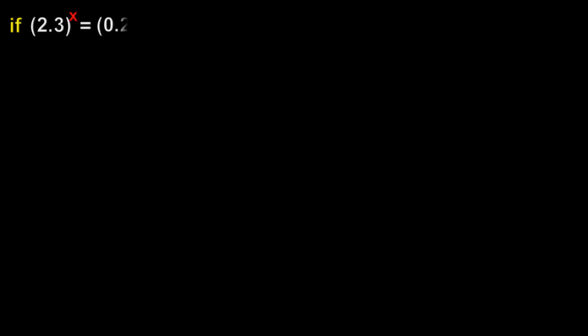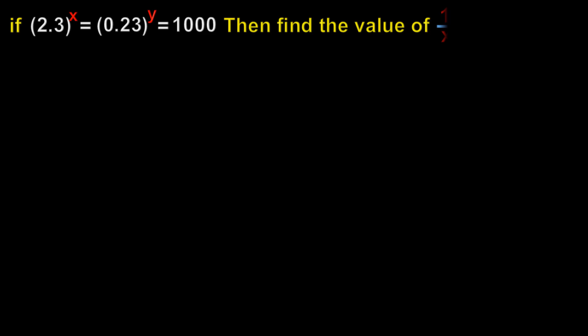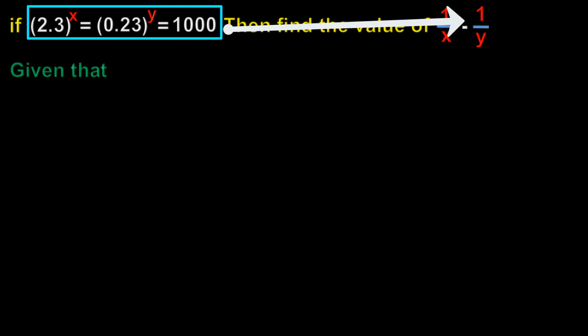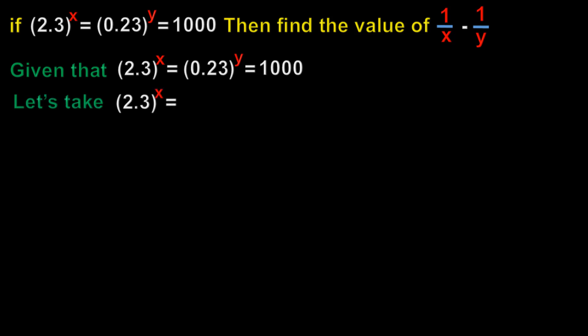Let us see one more problem. If 2.3^x = 0.23^y = 1000, then find the value of 1/x − 1/y. So here we are given 2.3^x = 0.23^y = 1000. By using this we need to find the value of 1/x − 1/y. Now let us consider 2.3^x = 1000 and also take 0.23^y = 1000.